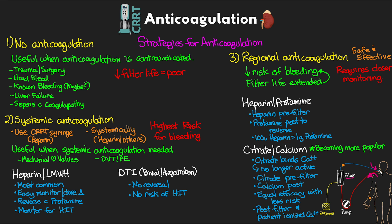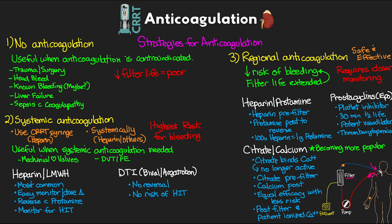The last drug group for regional anticoagulation is prostacyclins, such as epoprostenol. I personally have never seen these given but have seen them mentioned in literature. Prostacyclins are platelet inhibitors and antithrombotics with a very short half-life of about 30 minutes. However, they are potent vasodilators, and if not dosed properly they can lead to worsening hypotension in shock patients — which is common in CRRT patients — as well as cerebral edema and risk for thrombocytopenia.